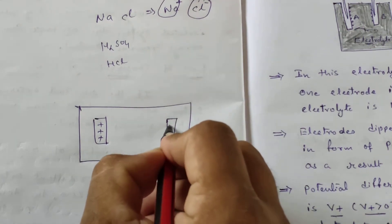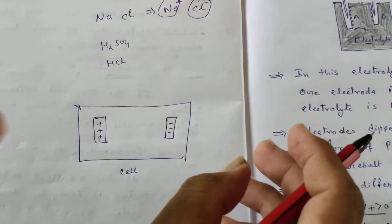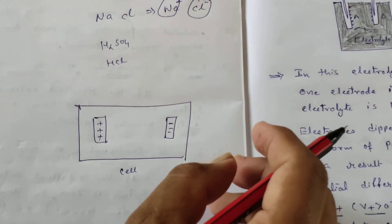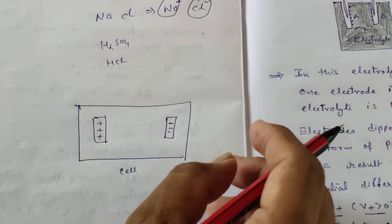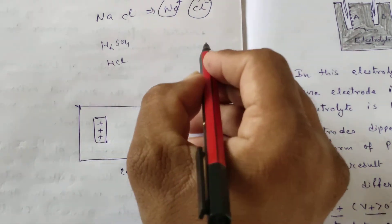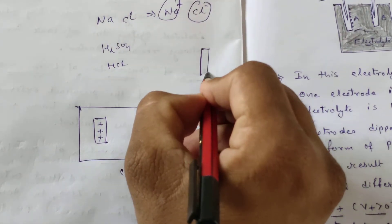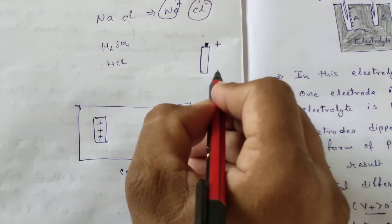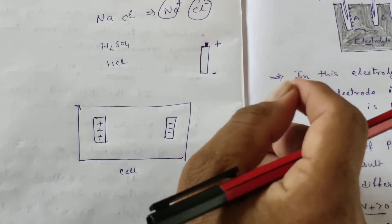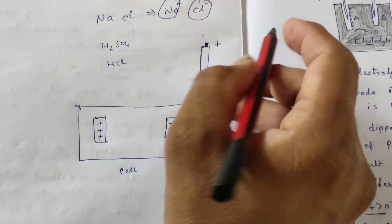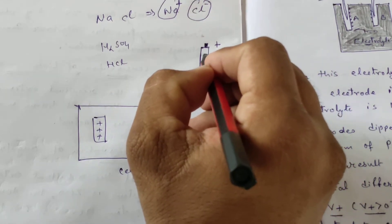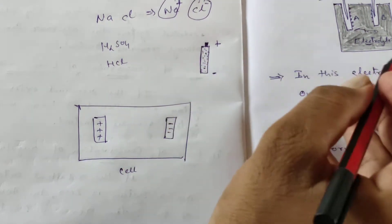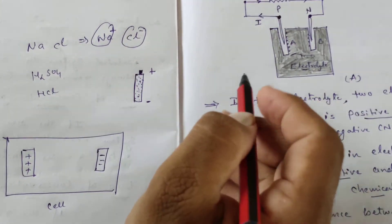Here we have a negative terminal. You can see a cell used in a remote or clock — that cell will look like this. The top part is the positive portion and the bottom part is known as the negative portion. If you break it open, you will find materials inside, and that material is nothing but one type of electrolyte.